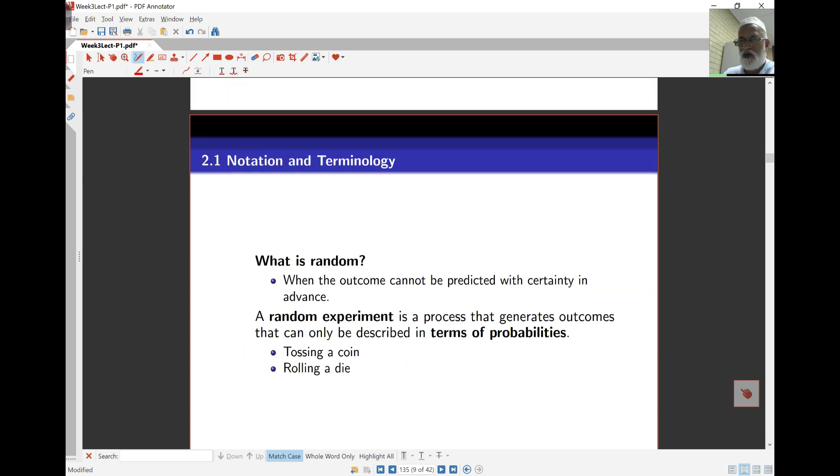Notation. Let's look at what we mean by random. Random really means something that cannot be predicted with certainty. There's some element of chance involved, something unknown. A random experiment is one that generates outcomes that can only be described in terms of probabilities.